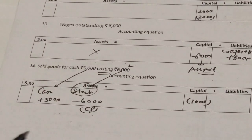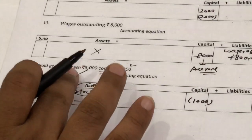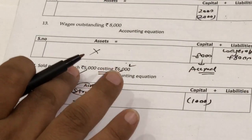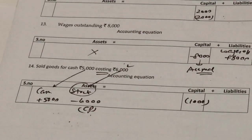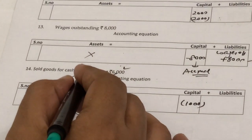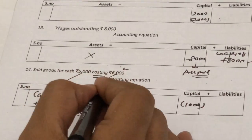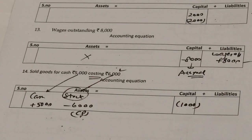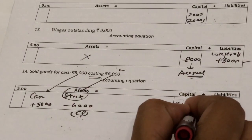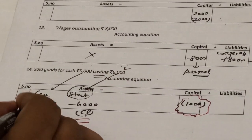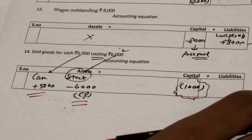Next transaction: goods sold for cash 5,000 costing 6,000. Many students assume 1,000 is profit — but read carefully: sold for 5,000, costing 6,000, so 1,000 is a loss, not a profit. Cash is added 5,000, stock is subtracted at cost price 6,000, and the loss of 1,000 is subtracted from capital. Always remember: cost price is adjusted in stock and losses are subtracted from capital.